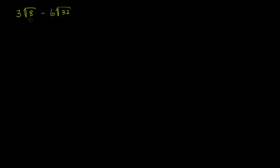First of all, 8 — we can write that as 2 times 4, and 4 is a perfect square. We could further factor that into 2 times 2, but I don't think we need to. So we can rewrite 3 square roots of 8 as 3 times the square root of 4 times the square root of 2. This is the same thing as the square root of 4 times 2, which is the square root of 8.